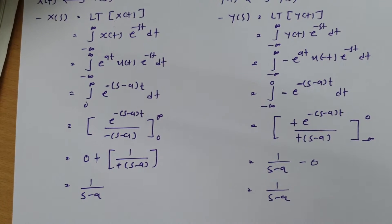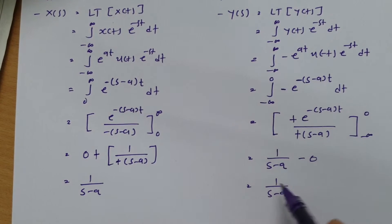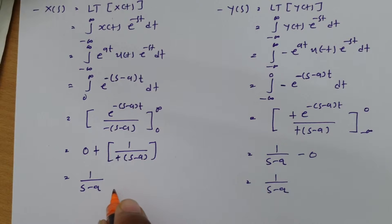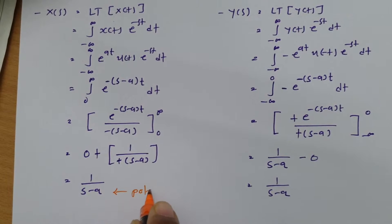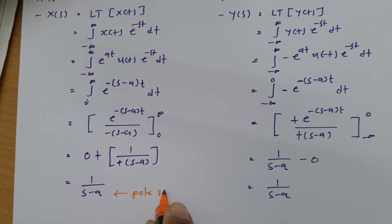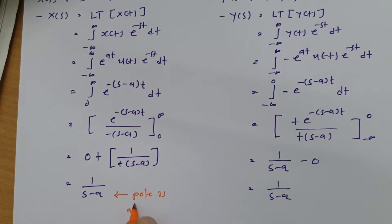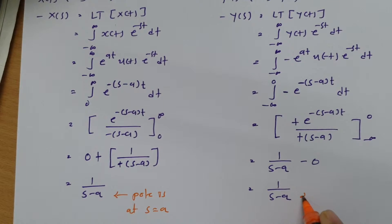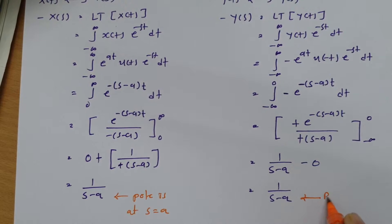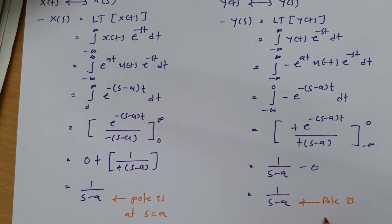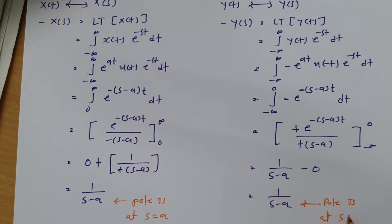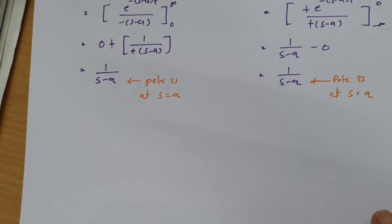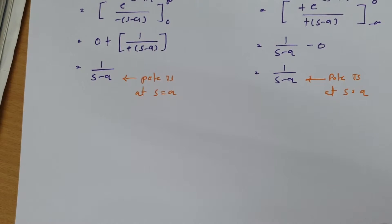So the Laplace transform for both signals is the same: 1 divided by (s minus a). For both cases, the pole is at s equals a. Now let us plot the ROC for both cases to make it more clear.